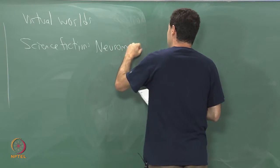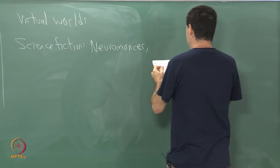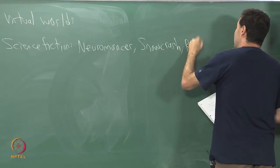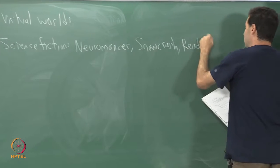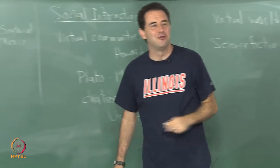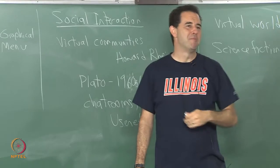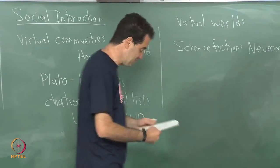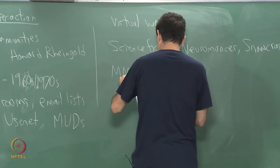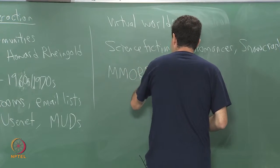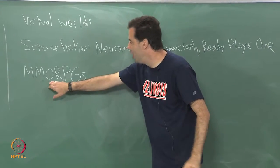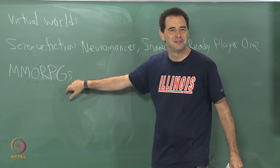Usually these books involve some kind of dystopian future society of people connected together through virtual reality. You can look these up if you have not seen them: Neuromancer from the 80s, Snow Crash from the 90s, and Ready Player One from a few years ago. These describe what might happen to us if we immerse ourselves in virtual reality almost all the time.